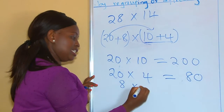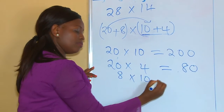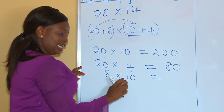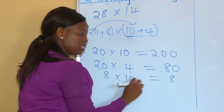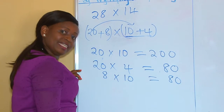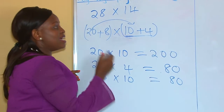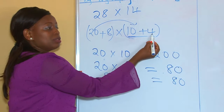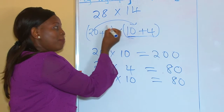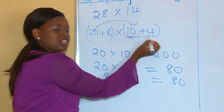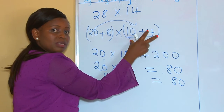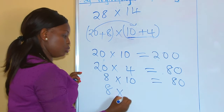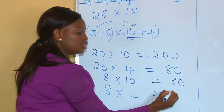Now we are picking our second part of the number that we split, which is 8. 8 times 10 is 80 — so 8 times 1 is 8, and our zero, push it there, that is 80. Again, we say 8 times 4. Remember, we are picking a digit to multiply everything on the other side. So 8 times 4 is 32.